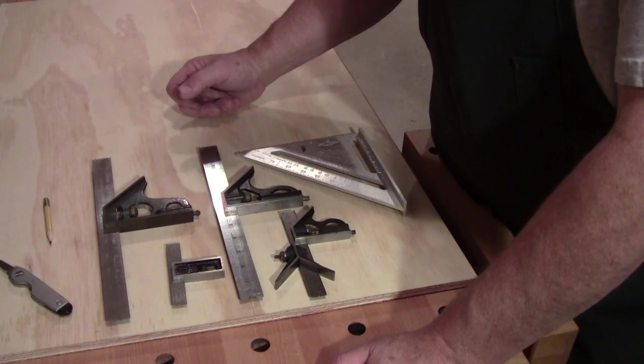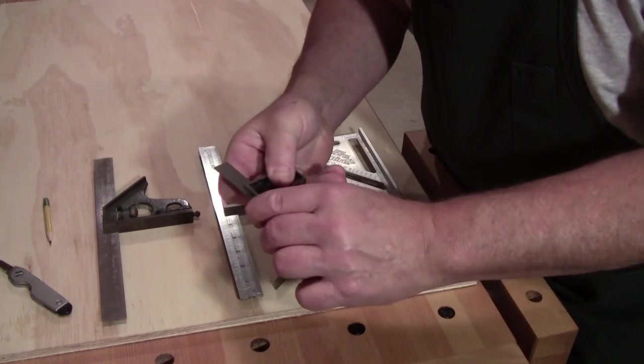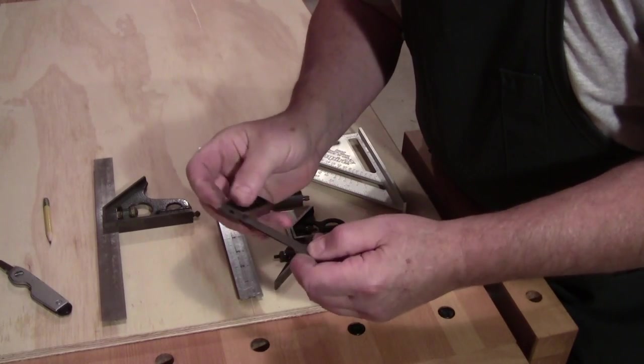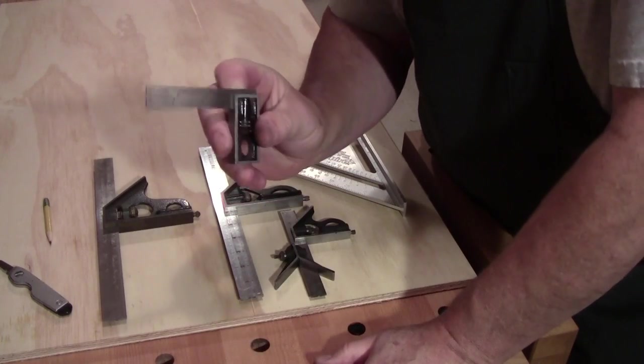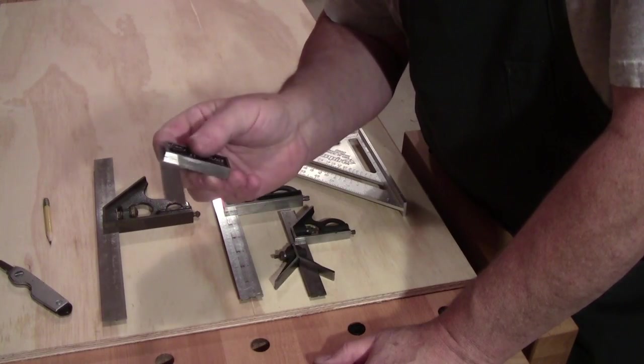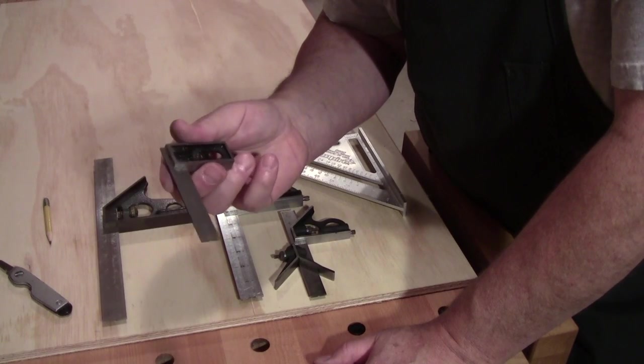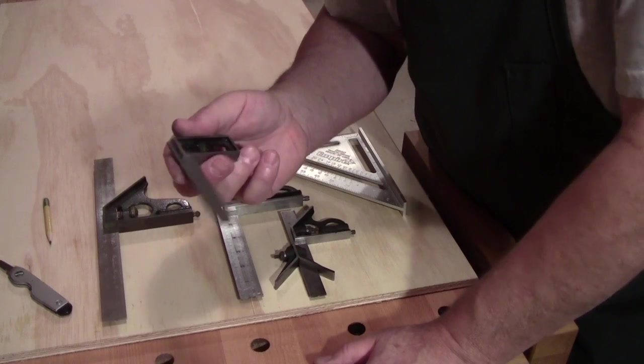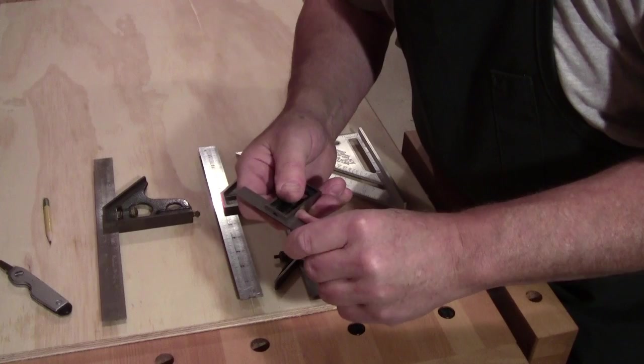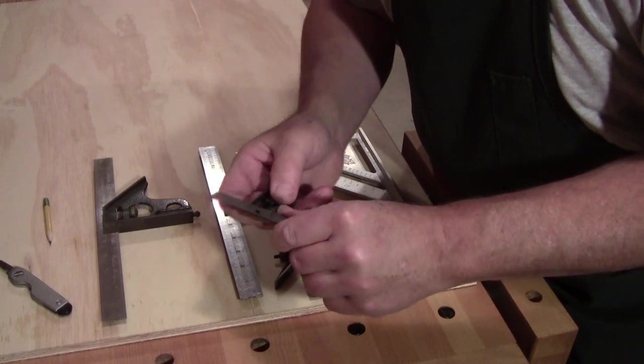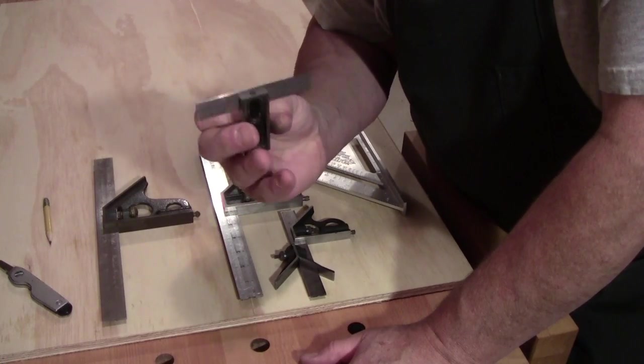Then I wanted a small pocket square just for checking the edges of boards to see if they were square and for checking plane blades as I was grinding them. This was a nice little pocket square. It's not cheap, it's a Starrett. Picked it up on eBay at a discount compared to buying brand new, and this is called a double square. It's square on both sides.